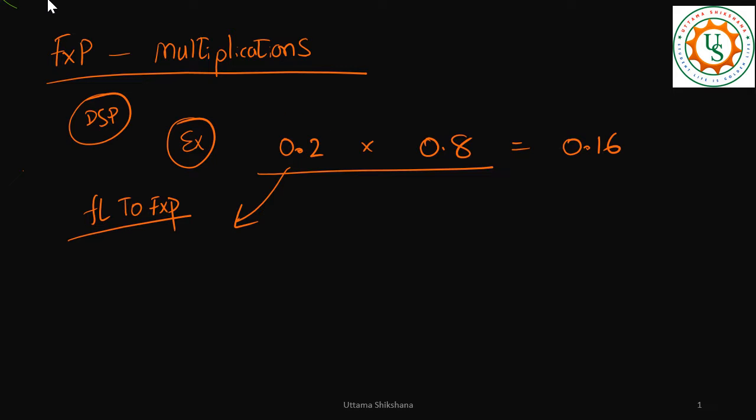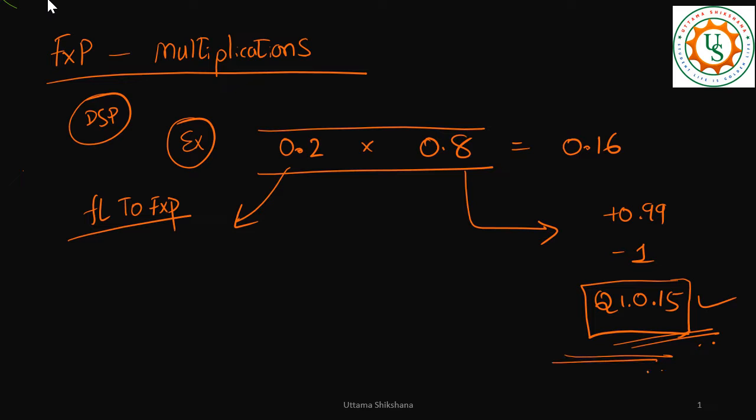Now, since the range of these numbers are plus 0.99 and minus 1, Q1.0.15 would be better. So I will choose this format. Now maybe we can see the multiplication with different formats.